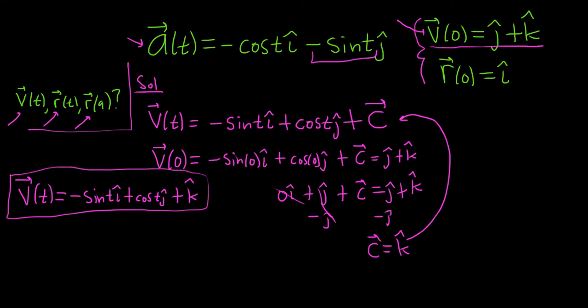Good stuff. So now we have to find the position vector, or position vector-valued function. So to do that, we have to integrate the velocity. So integrating the velocity, we get the position. When you integrate negative sine, you just get cosine because the derivative of cosine is negative sine.